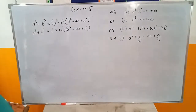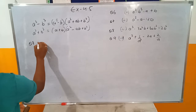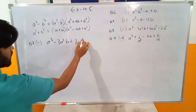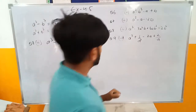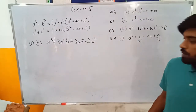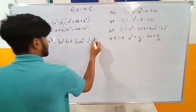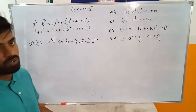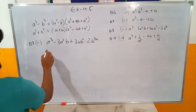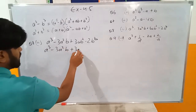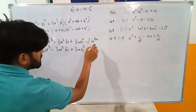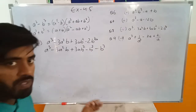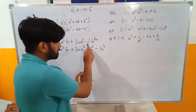Question number eight, second part: a cube minus 3a square b plus 3ab square minus 2b cube. The problem here is that we have 2b cube. I will split it: a cube minus 3a square b plus 3ab square, writing minus 2b cube as minus b cube minus b cube separately.